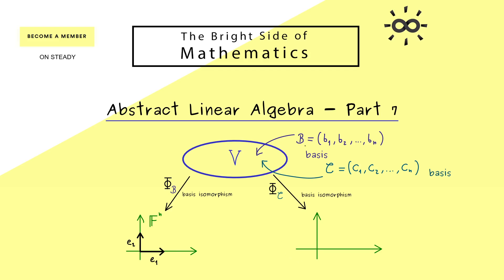But now instead of b1 we map c1 to the first canonical unit vector. And then we map c2 to e2. And of course this continues which means this basis is now represented by the standard basis in F^n.